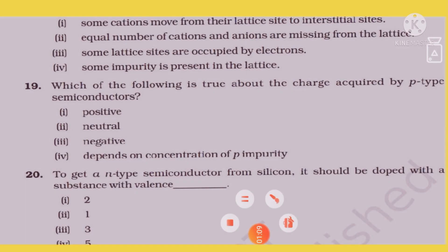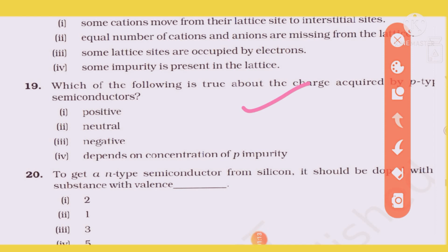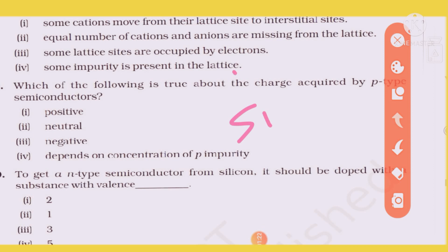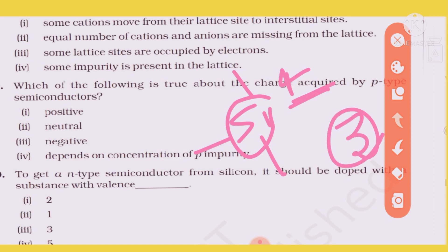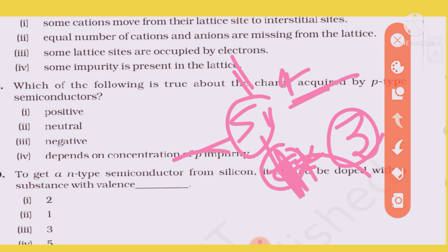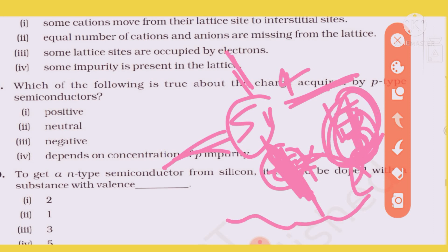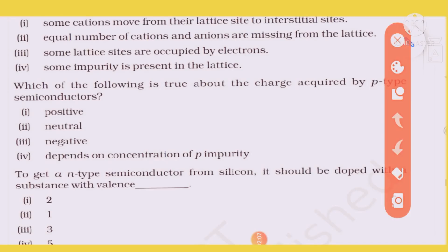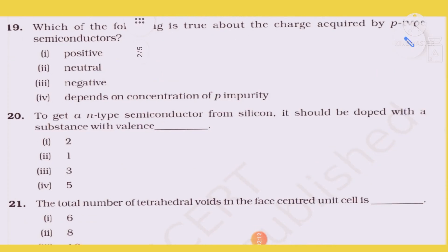Question 19: Which of the following is true about the charge carriers in p-type semiconductor? In p-type semiconductor, silicon is doped with a substance having fewer valence electrons — like group 13 element. This creates electron deficiency, forming 'holes'. These holes act as positive charge carriers. The p-type semiconductor overall remains neutral in charge.